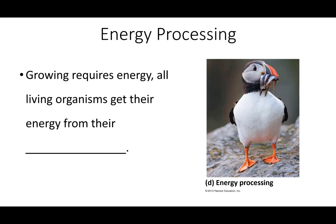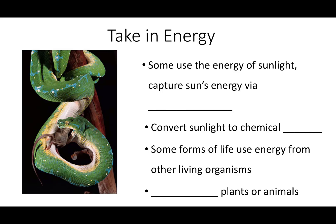All living organisms get their energy from their environment. Here we see a puffin consuming fish — the bird gets its energy from the food it eats. Some organisms are able to use the energy of sunlight, capturing it via a process called photosynthesis, converting sunlight into chemical energy. Some forms of life use energy from other living organisms and must consume plants or animals in order to get their energy.